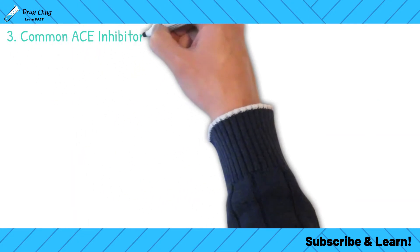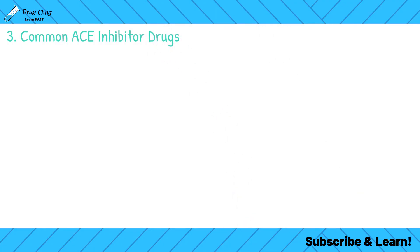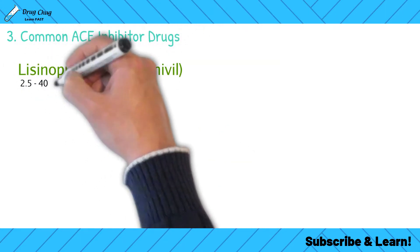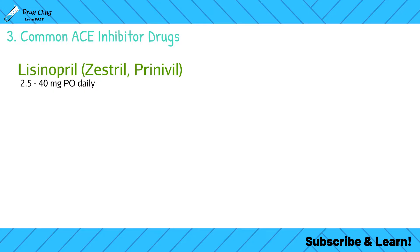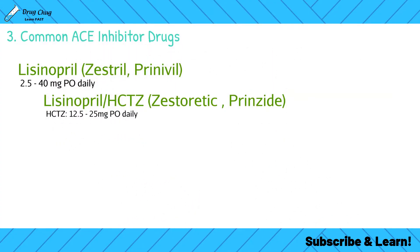Let's talk about common ACE inhibitors. By far the most common is lisinopril, with brand names Zestril or Prinivil — notice lisinopril ends in '-pril' as do the brand names. There's also a combination product of lisinopril and hydrochlorothiazide (HCTZ), branded as Zestoretic or Prinzide. Hydrochlorothiazide is a water pill, which we'll cover in another video.